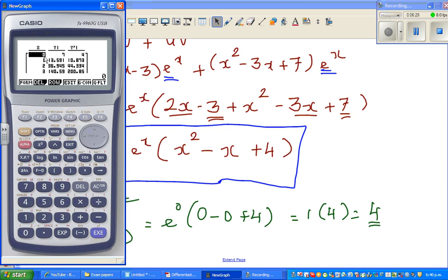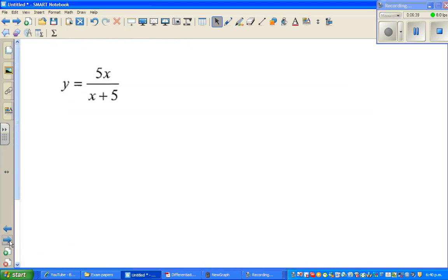So at 0, your y value would be 7 and the gradient dy/dx is 4. So your answer is right.